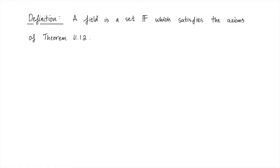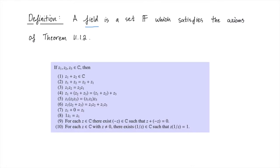Here's a definition that you may or may not have seen before. A field F is a set together with two operations, addition and multiplication, that satisfy the axioms in theorem 11.1.2. Well, what are these axioms? They're the properties that the complex numbers satisfy. However, these axioms are also satisfied by other sets of numbers, for instance, the real numbers or the rational numbers.